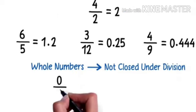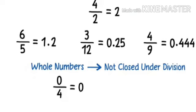What is 0 divided by 4? It's 0. And what is 4 divided by 0? Is it also 0? Or perhaps some other number?